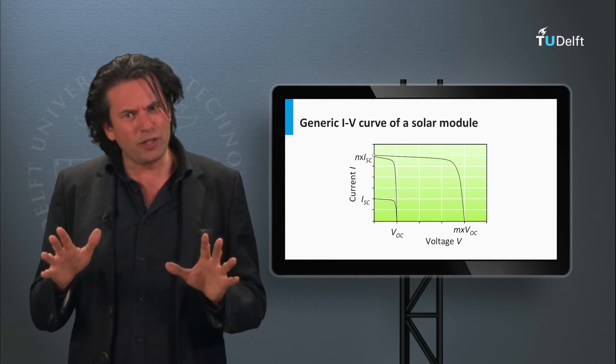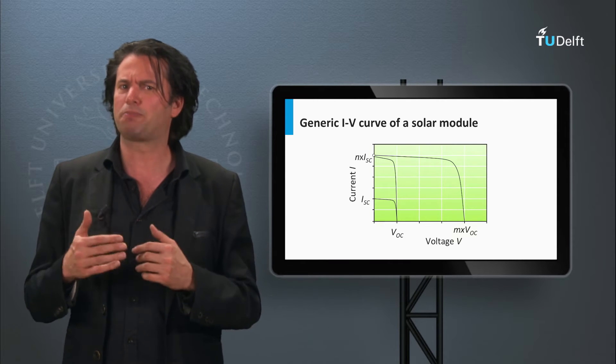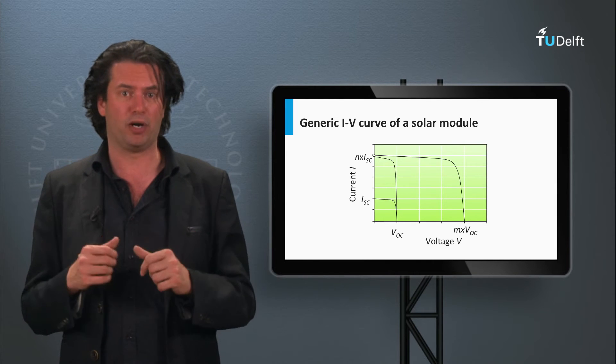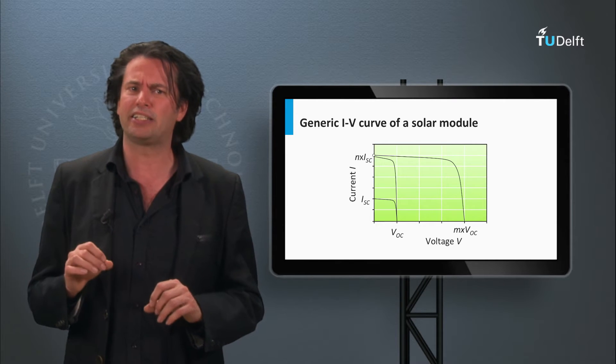In an ideal world with perfectly matched solar cells and no losses, one would expect that the efficiency and the fill factor at both the module and cell levels to be the same. But this is not the case in practice.